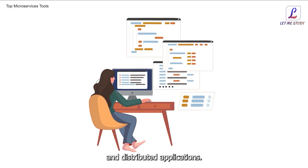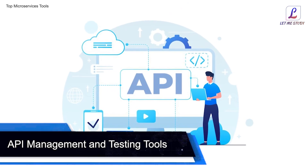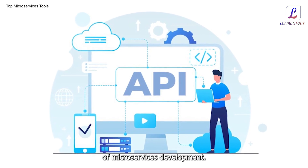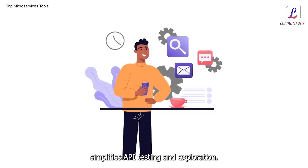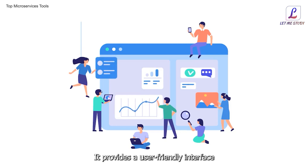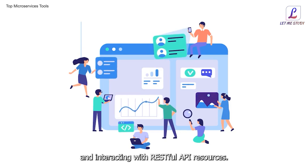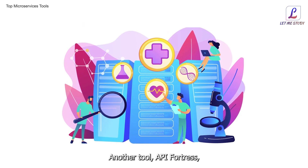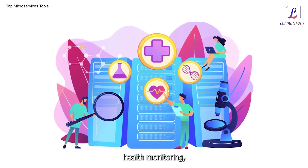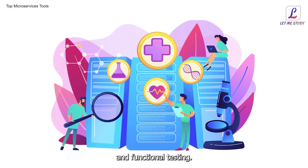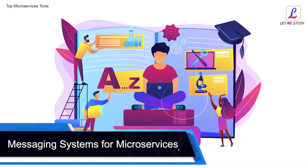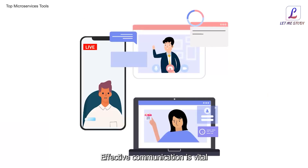API management and testing tools are crucial components of microservices development. Postman, a widely used tool, simplifies API testing and exploration, providing a user-friendly interface for creating tests and interacting with RESTful API resources. Another tool, API Fortress, focuses on automating the testing of APIs including load testing, health monitoring, and functional testing. It emphasizes interoperability and collaboration in API management.